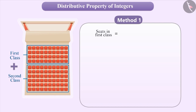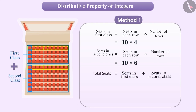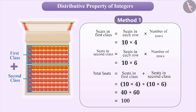The number of seats in the first class is equal to the number of seats in each row multiplied by the number of rows, which is 10 × 4. Similarly, the number of seats in second class is equal to 10 × 6. So, the total seats in the auditorium equals 10 × 4 + 10 × 6, which is 40 + 60 = 100 seats.